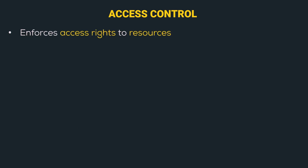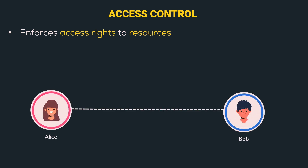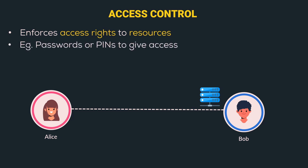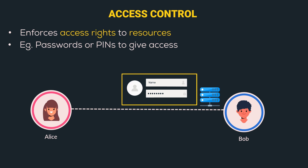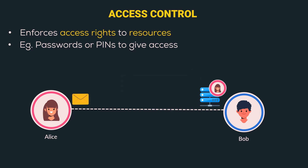The next and last mechanism is access control. In access control, we enforce access rights to resources. Bob has a server that receives messages, and we need access control to avoid DOS attacks. In the access control mechanism, we can use any authentication system such as passwords or PIN to authenticate the user and then provide access to the authenticated user. Alice sends her credentials to the server to authenticate herself. Once her credentials are validated, the server provides access to her. Since Alice has access, she can now send messages to the server. The server allows only messages from authenticated entities, thus avoiding DOS attacks.